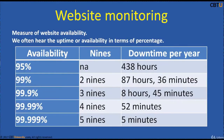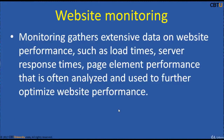Website monitoring is the measure of website availability. It is often used by businesses to ensure website uptime, performance, and functionality as expected. Uptime is often expressed as a percentage — 99% uptime means approximately 87 hours and 36 minutes, or about 4 days of downtime per year. Website monitoring gathers extensive data on performance such as load times, server response times, and page element performance, which is analyzed and used to further optimize website performance.